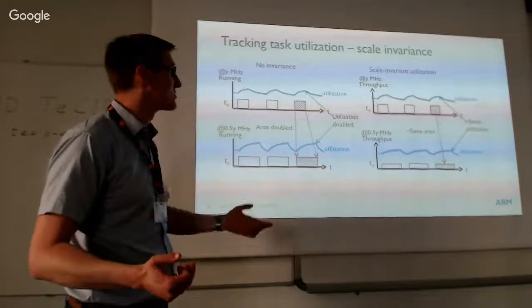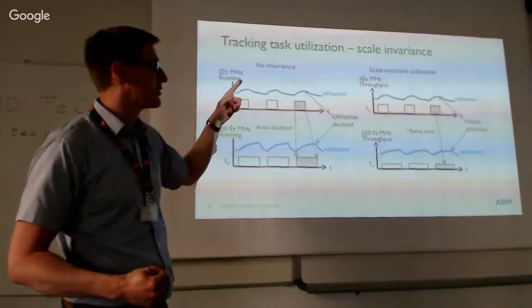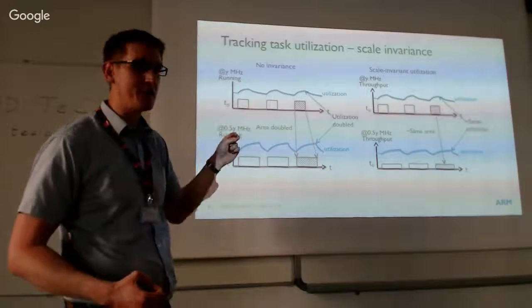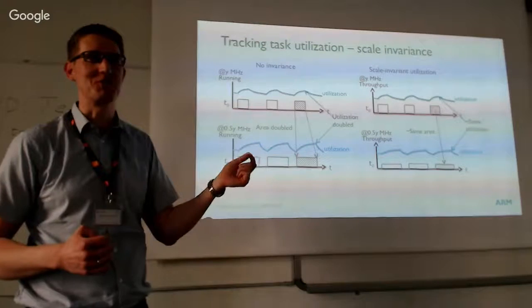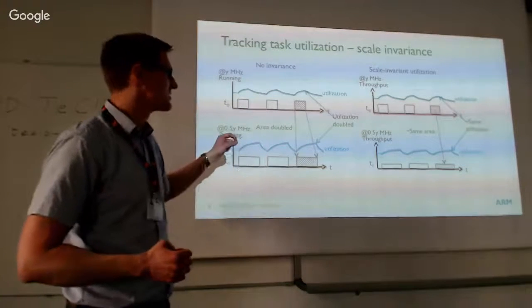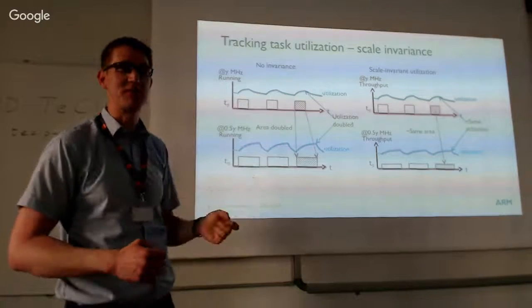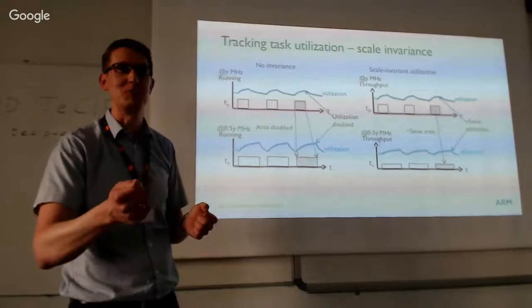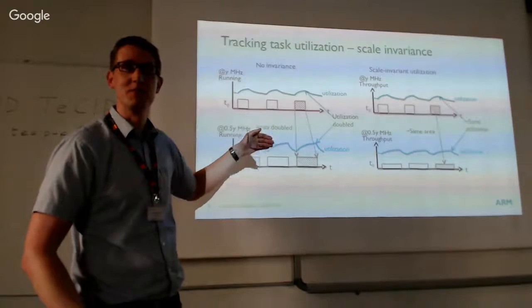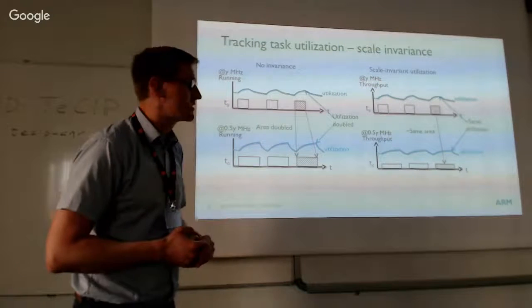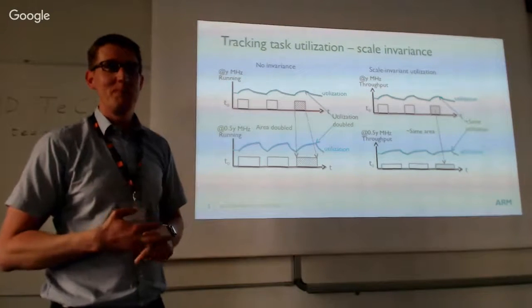To compensate, we use what we call scaling invariance — we compensate for both frequency scaling and for different micro-architectures. Whenever we update the PELT signal based on execution time, we scale it by how fast we're running compared to the maximum compute capacity of that CPU. We all know it's an approximation, but it's a first-order approximation because there isn't anything better we can do.